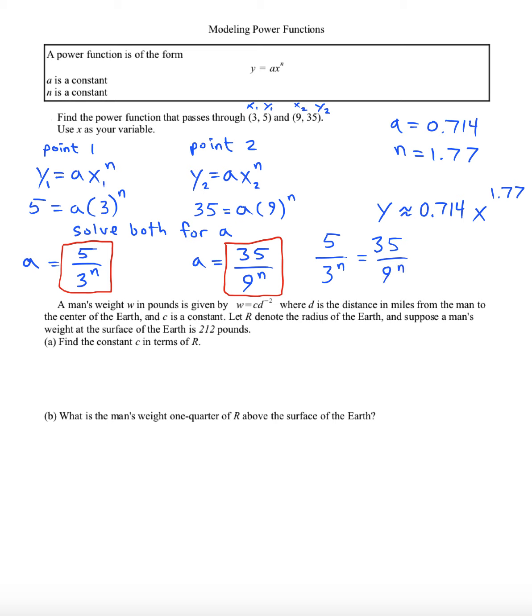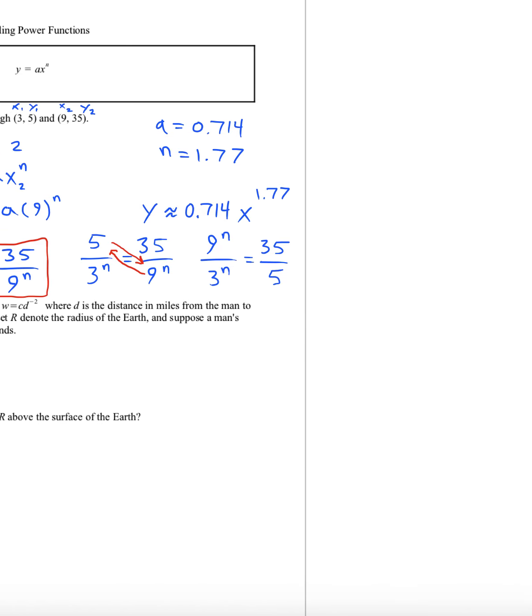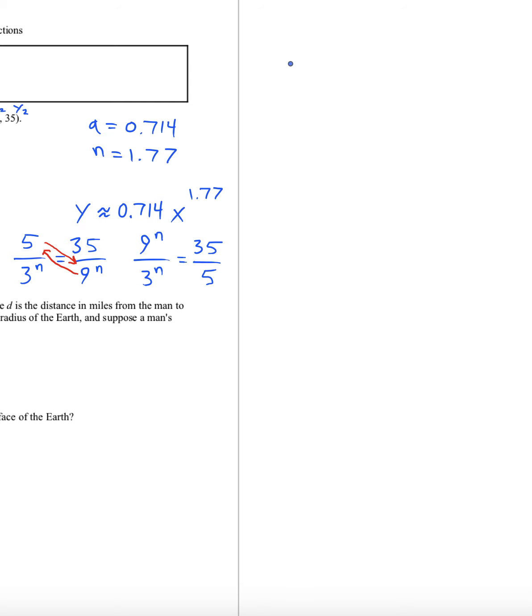Now I need to get the n's together so I'm going to do a little bit of cross multiplication here. I'm going to send the nine to the n up here and swap it with the five. So we'll get nine to the n over three to the n equals 35 over five. I'm going to use this property of exponents that nine to the n over three to the n is the same as nine over three all raised to the n, and we can do this division and get seven.